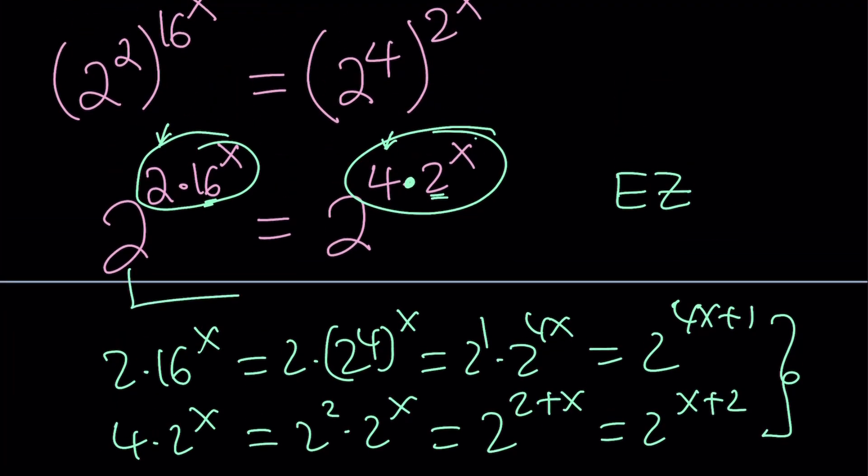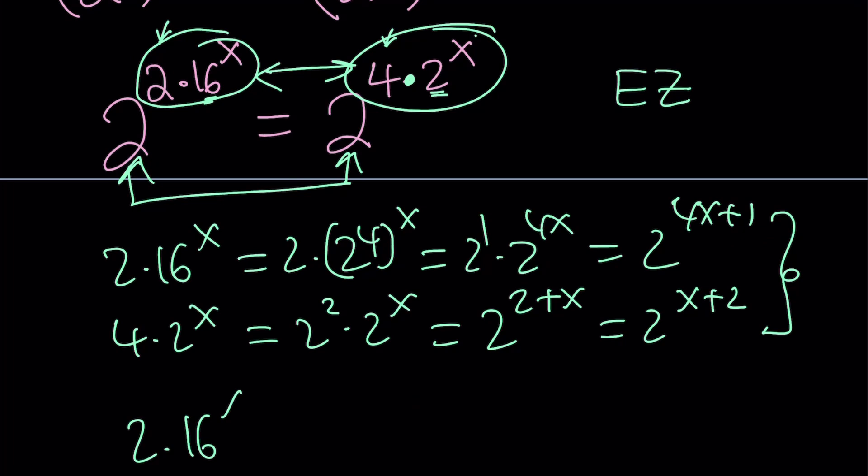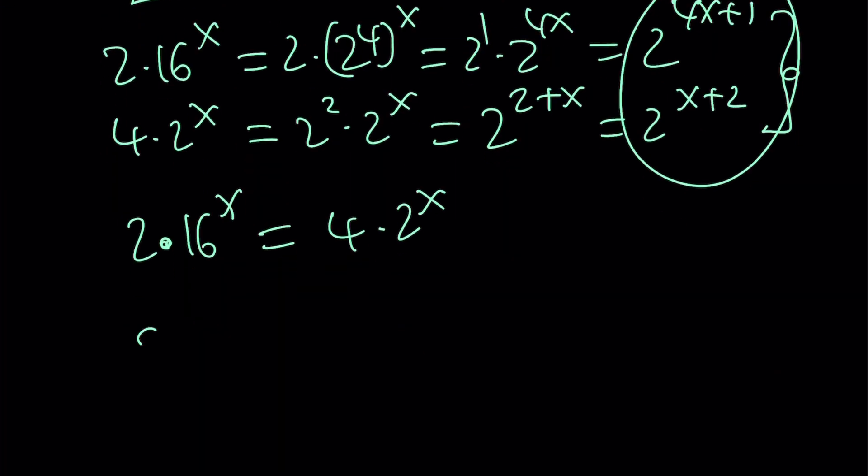Since these bases are equal, I'm just going to equate the exponents. Make sense? So 2 times 16^x is 4 times 2^x, but I'm going to replace them with these. So this gives me 2^(4x+1) = 2^(x+2).